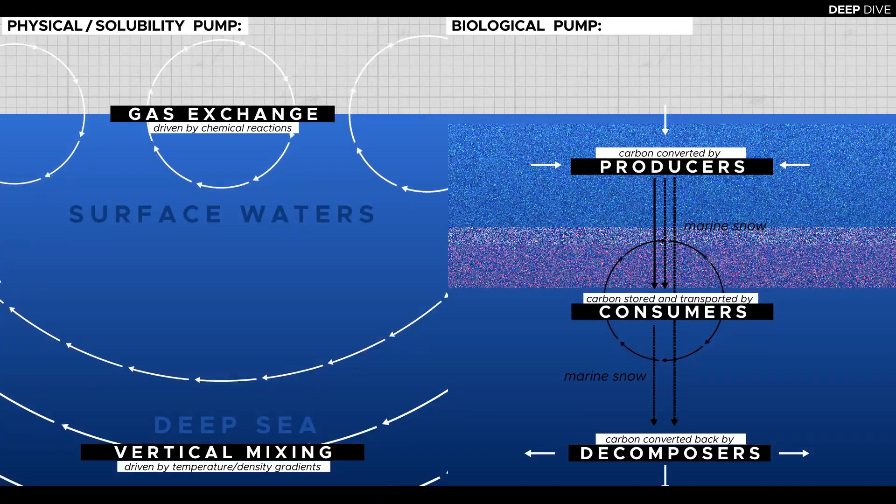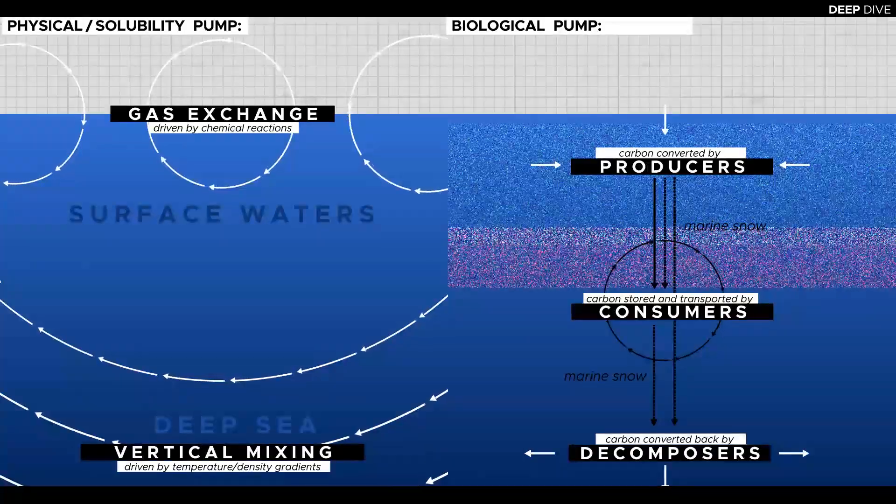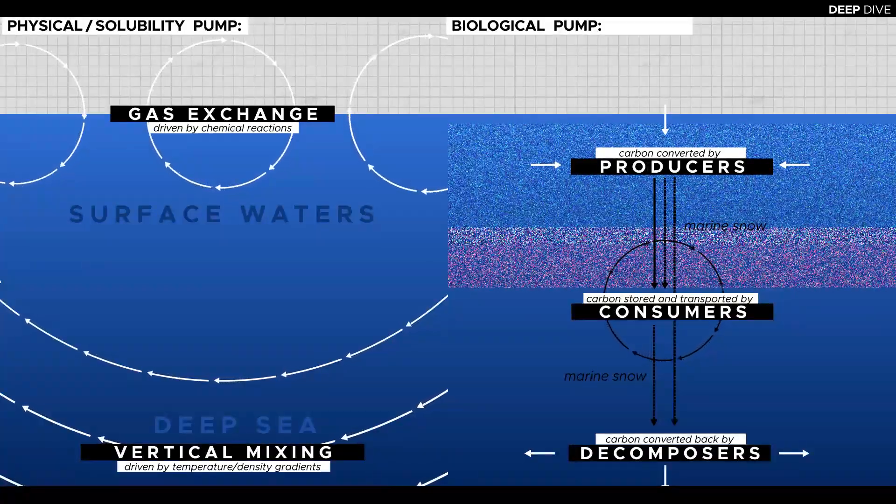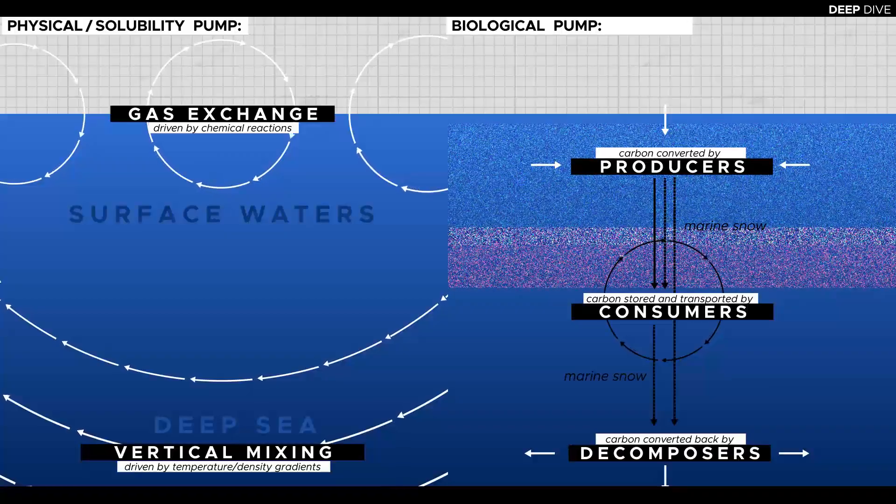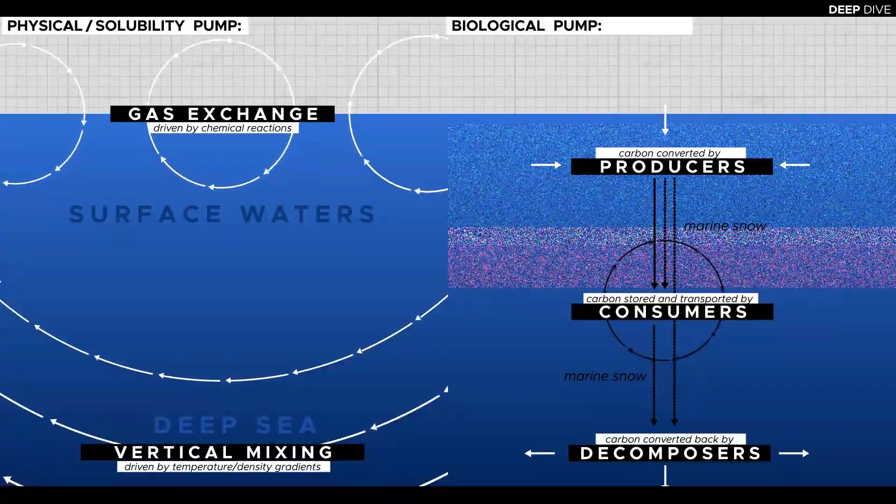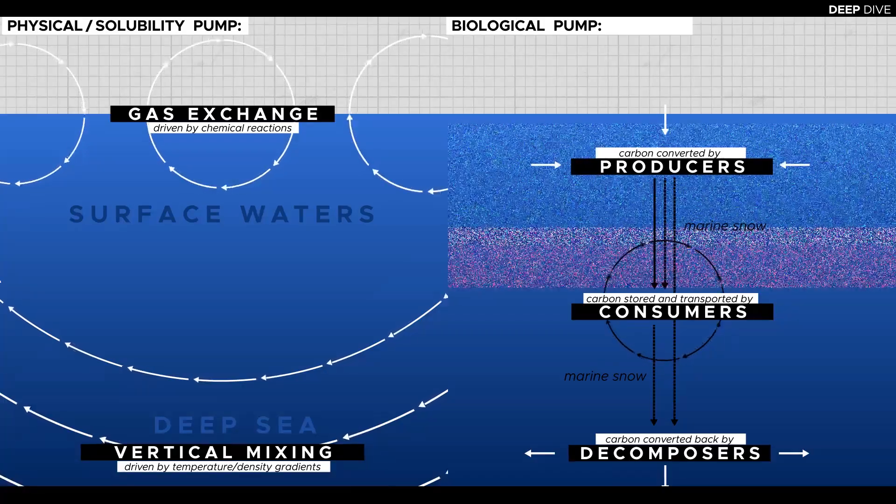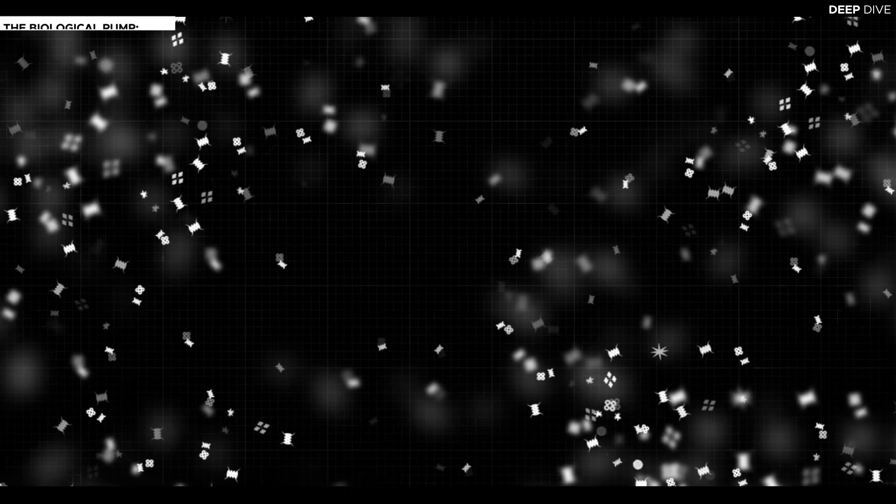This mechanism describes the storage and redistribution of organic carbon in the ocean by the plants and animals that inhabit it. As our understanding of these processes has increased over the last two to three decades, it has become clear that this aspect of the carbon cycle was substantially underestimated in the past. In a nutshell, it works like this.